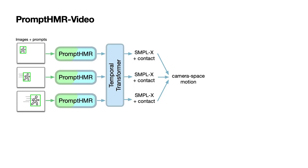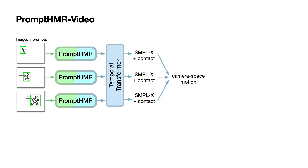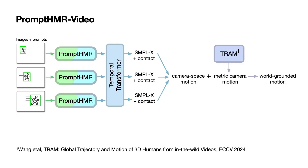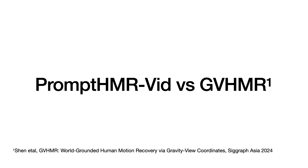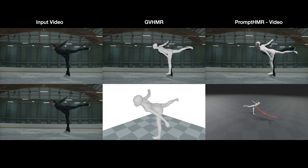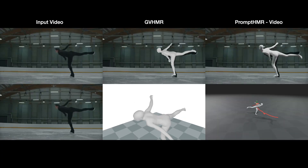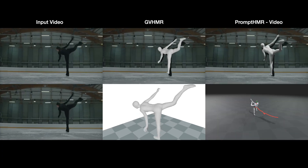We also extend PromptHMR to video by including a temporal transformer at the decoding phase. It also outputs contact probability, which we use in post-processing to reduce foot skating. Combined with metric camera motion from TRAM, we project the human motion into world coordinates to recover world-grounded motion. PromptHMR video yields more accurate world trajectories since it uses metric SLAM to transform human trajectory to world coordinates, and is able to decouple human and camera motion better compared to GVHMR.